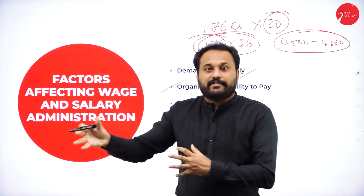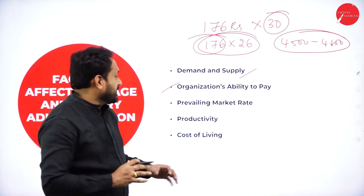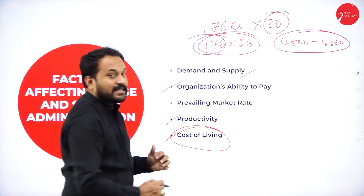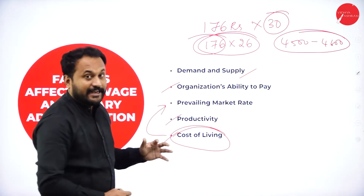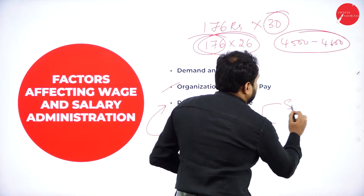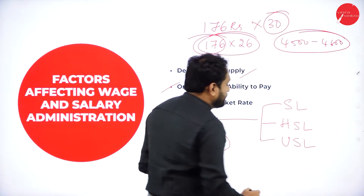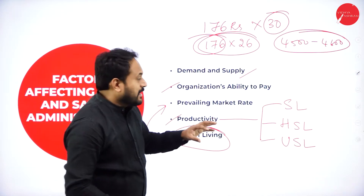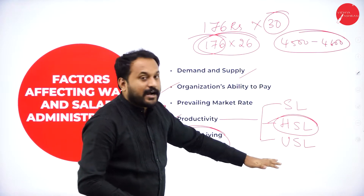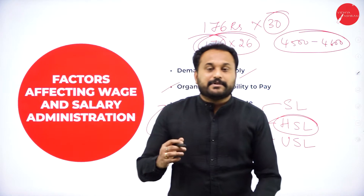The minimum wage rate act says you cannot pay less than 176 rupees — nobody will actually work for 5,000 per month given the cost of living. This leads to the next factor: productivity and cost of living. Cost of living is proportional to the prevailing market rate. There are three types of labor: skilled, highly skilled, and unskilled — and productivity determines their respective wages.